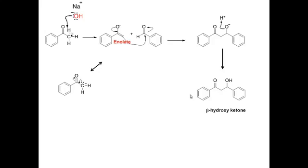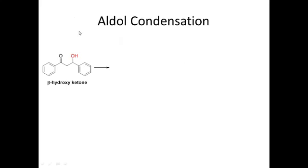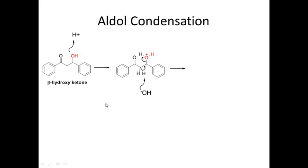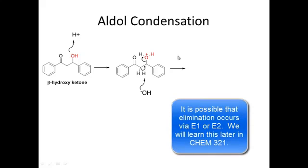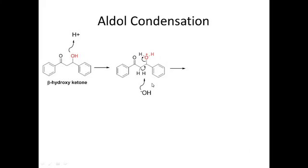Now, where does the aldol condensation product come from? If we start with the beta-hydroxy ketone and protonate it, we convert the OH into water. Water is a good leaving group. So now, if we have a base come in and deprotonate here, we use this pair of electrons to put a double bond here and lose water. This is an elimination reaction — either E2 or E1 — and here's the aldol condensation product, with the water lost from elimination.